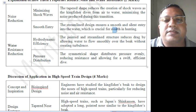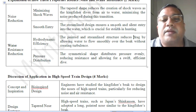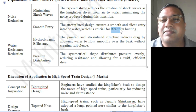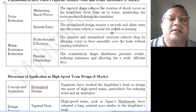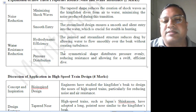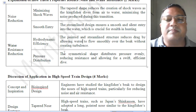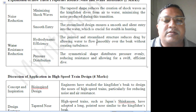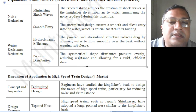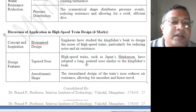The streamlined design ensures a very smooth and silent entry into the water, which is required for stealthy hunting — giving no clue to the fish even while moving very fast through water. Hydrodynamic efficiency: the pointed and streamlined structure reduces drag — the resistance offered to a body moving through water or air — so that flow occurs without creating turbulence. The symmetrical shape distributes pressure evenly, reducing resistance and allowing for an efficient dive.